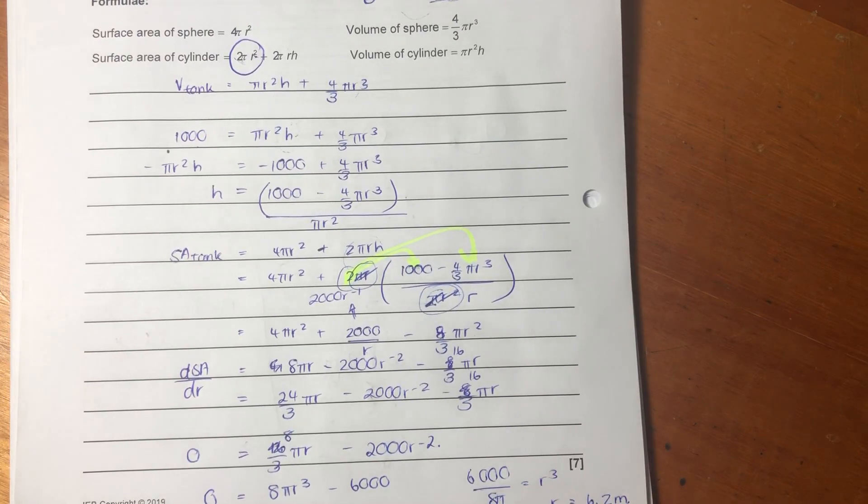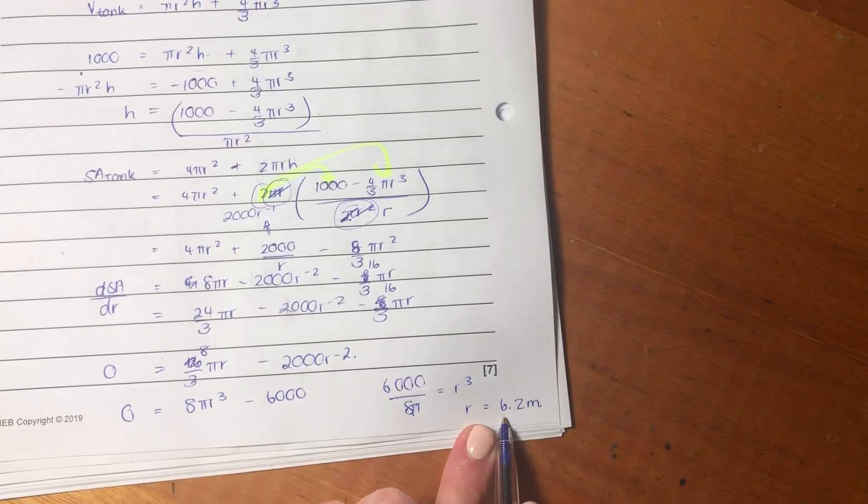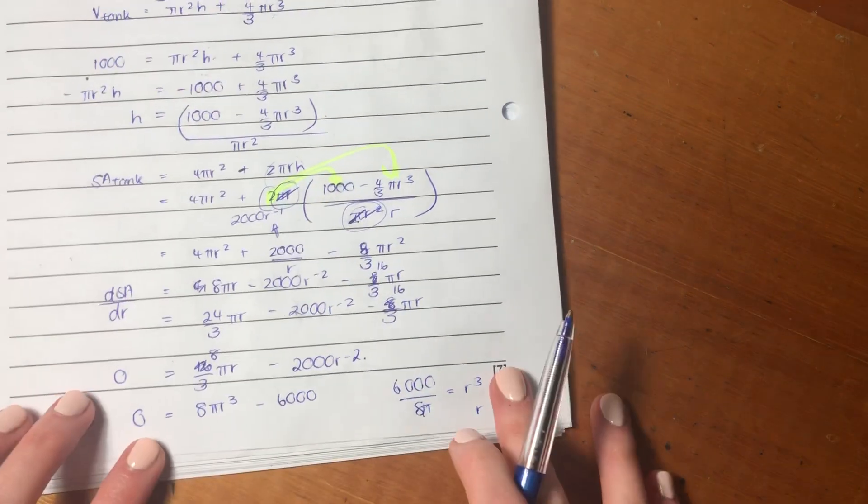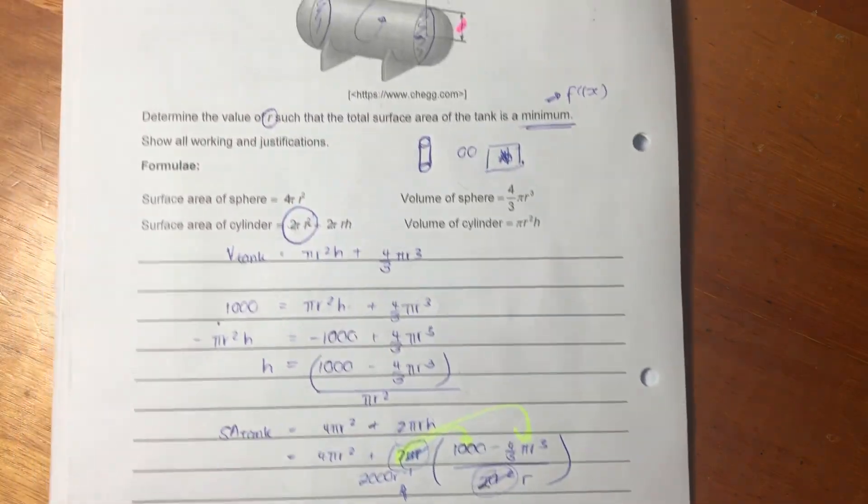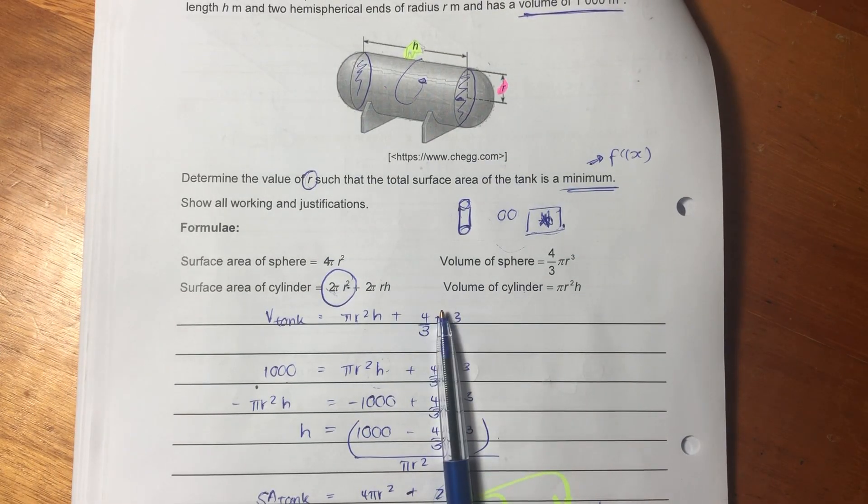So, it is a tricky question. I don't want to undermine how tricky these questions can be, but, again, it's one of those things. Try and visualize what they're asking you. So, it needs to be 6.2 meters. The radius needs to be 6.2 meters in order for the surface area to be at a minimum. I hope that was helpful. We only have one question left on probability, and then we are done with this paper.